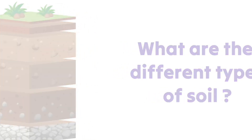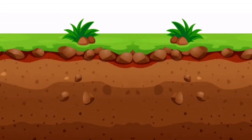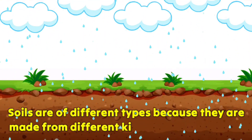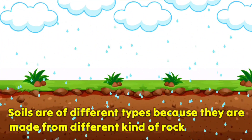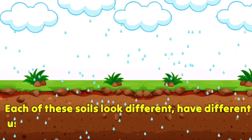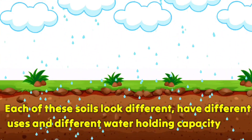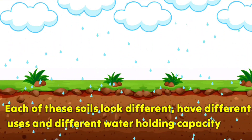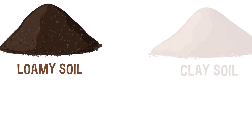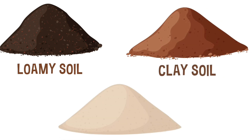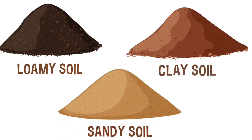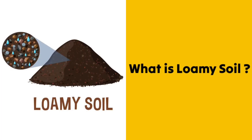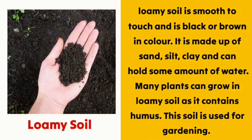Now let's learn about the different types of soil. Soils are of different types because they are made from different kinds of rock. Each soil looks different, has different uses, and a different water-holding capacity. Primarily there are three types of soil: loamy soil, clay soil, and sandy soil.